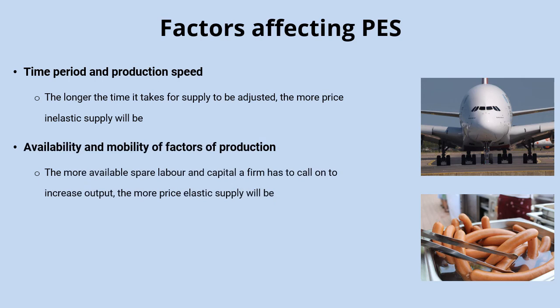Another factor is the availability and mobility of factors of production. For some goods, firms have lots of available workers they can call on to expand supply, and it's relatively easy to switch workers from other production into producing those goods. For example, it would be relatively easy to switch workers from producing other similar foodstuffs into producing hot dogs. Whereas production of passenger jets is quite specialised, making it more difficult to call on engineers and specialised labour — so supply for those goods is again more likely to be price inelastic. If it's easier to call on factors of production, supply is likely to be more price elastic.